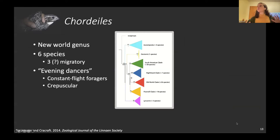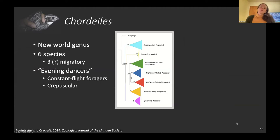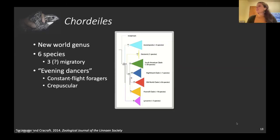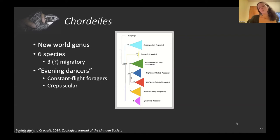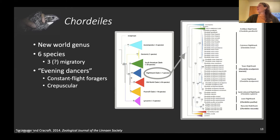Nighthawks belong to the Chordeiles genus — a New World genus found only in the Western Hemisphere, with six species. About three are migratory; the status of others is unknown. Due to their nocturnal lifestyle, very little is known about most nightjars. The nighthawk is arguably the best-understood species in the entire family, and even then we're just breaking ground on basic natural history. Chordeiles means 'evening dancer,' which captures that constant evening flight foraging behavior.